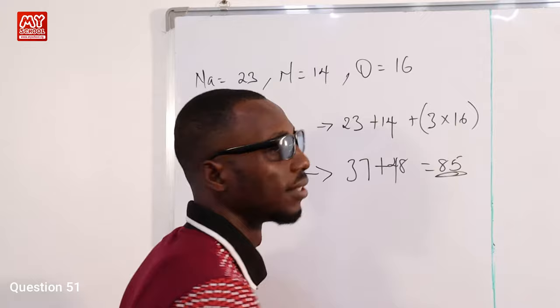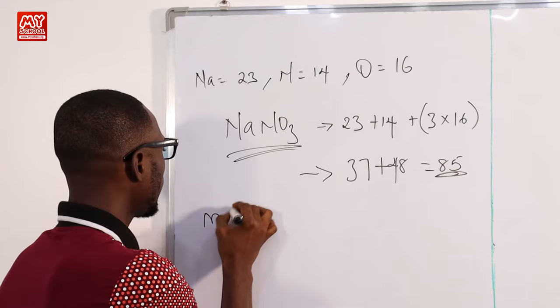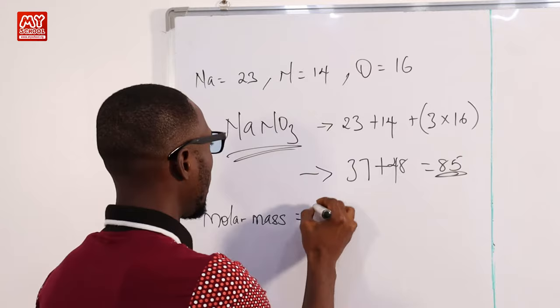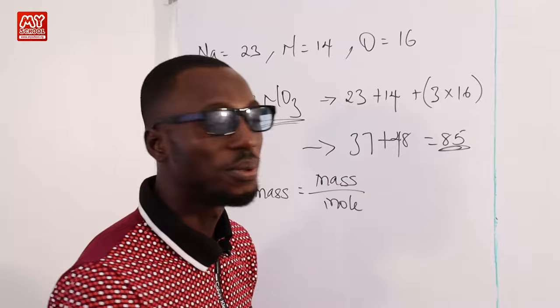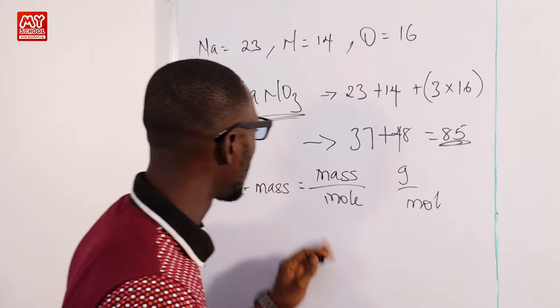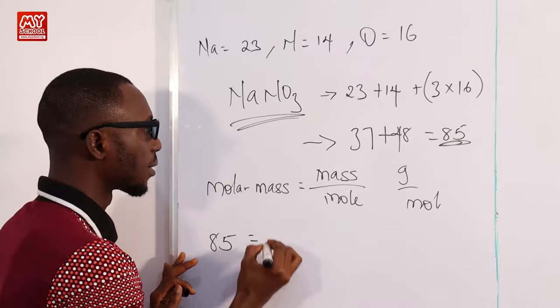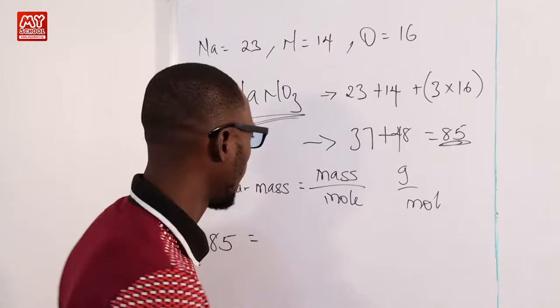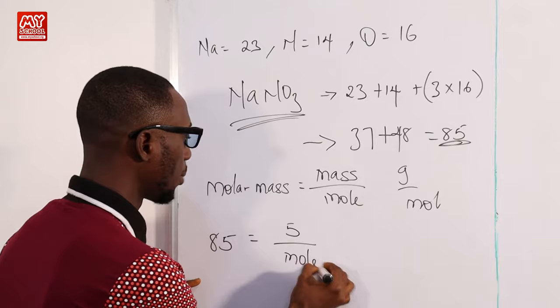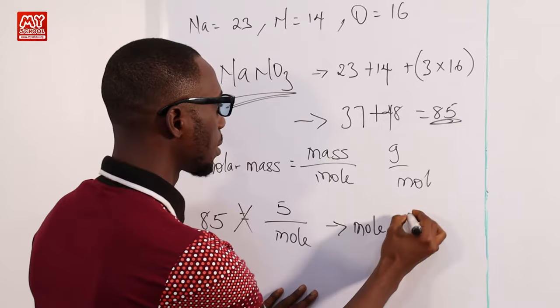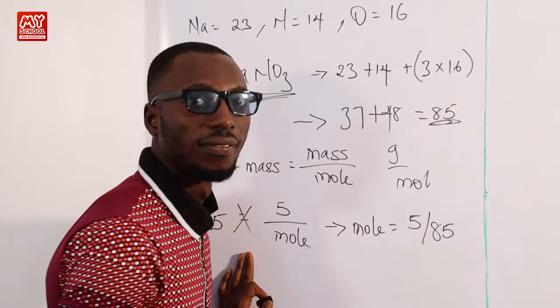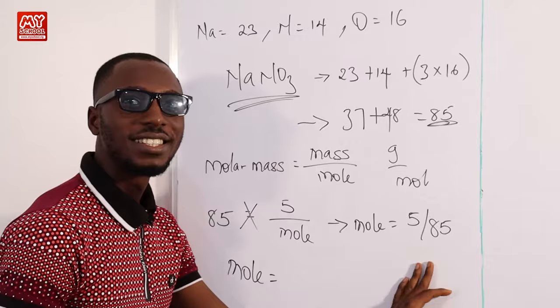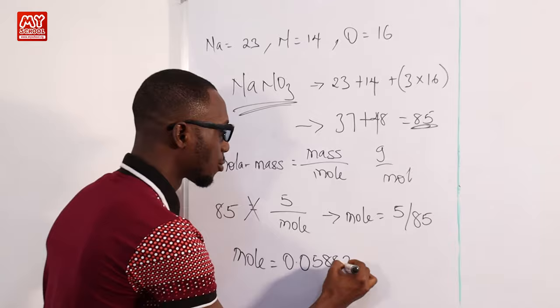Recall that molar mass equals mass over moles, with units of g/mol. We have molar mass = 85, mass = 5 g. So: 85 = 5/moles. Cross-multiplying gives moles = 5/85 = 0.05882 mol.